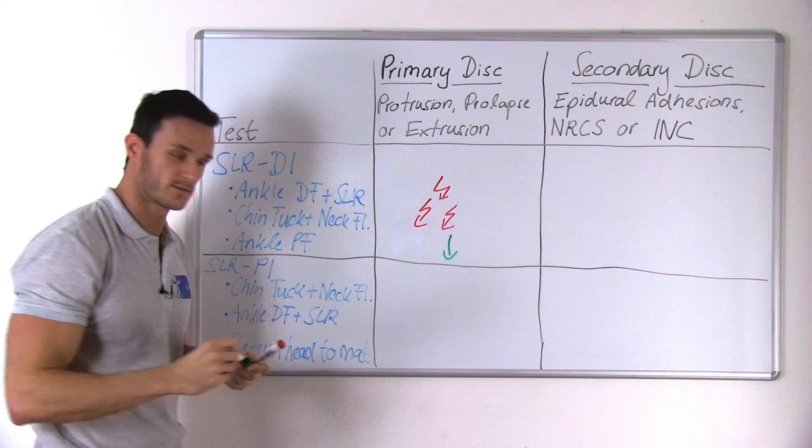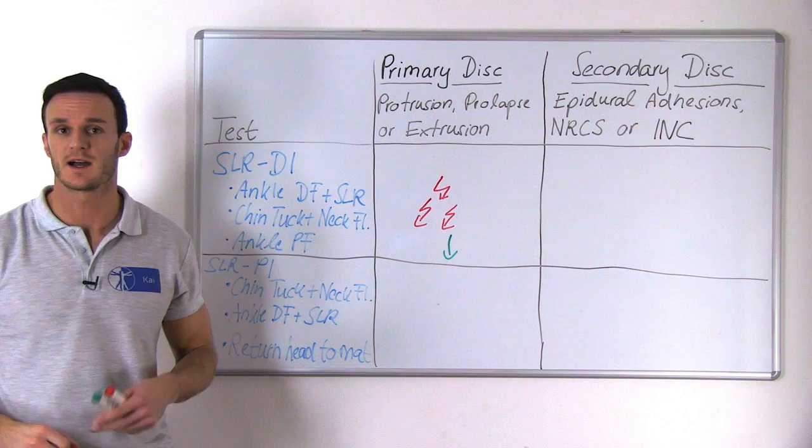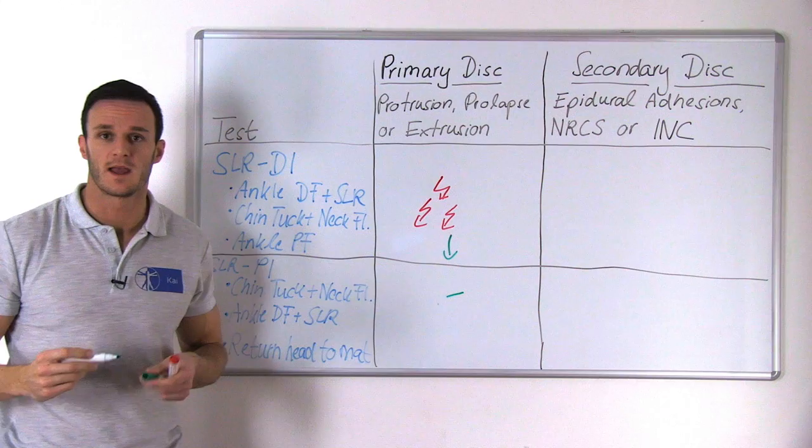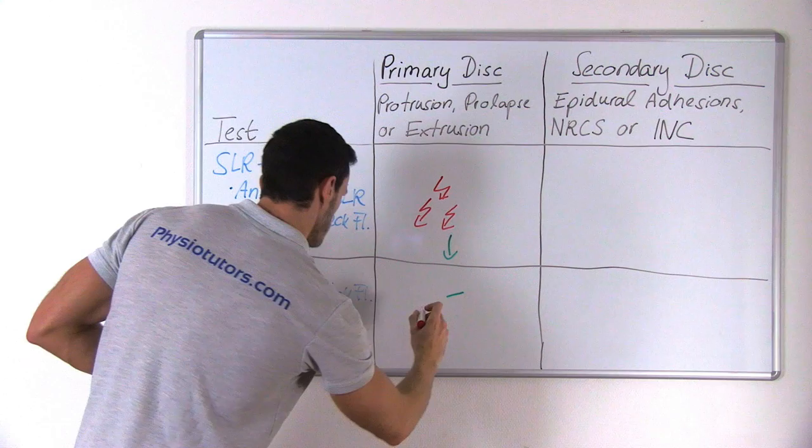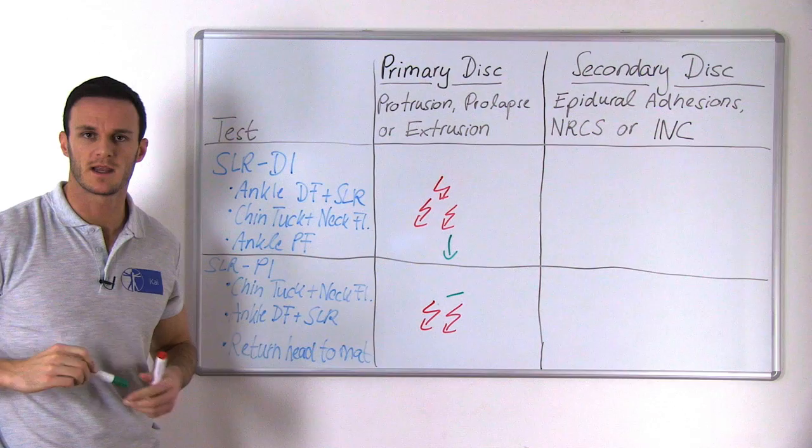In the proximal initiation, we will most probably have no pain yet with chin tuck and neck flexion alone. Again, we will have maximal pain when dorsiflexion and a straight leg raise are added. And we will have decreasing pain again as soon as the head is brought back to the mat.